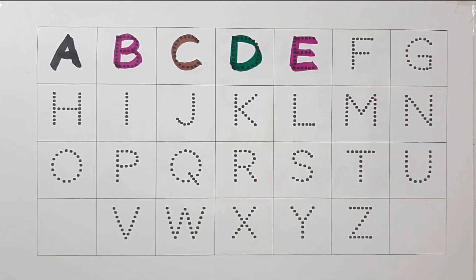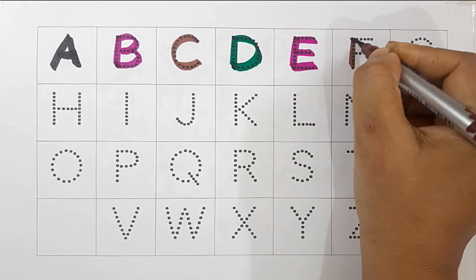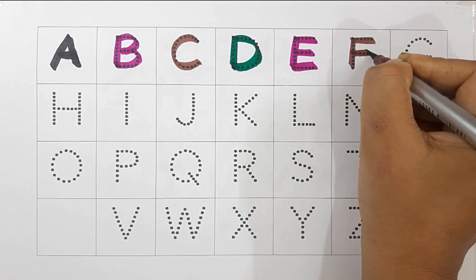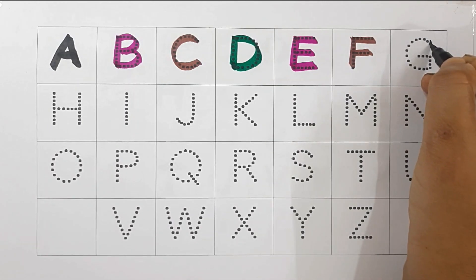Brown color, F, F for fish. Black color, G, G for goat.